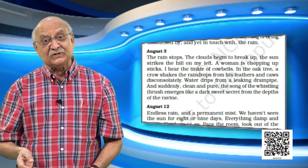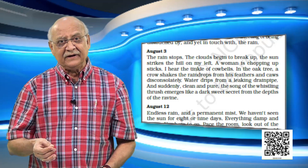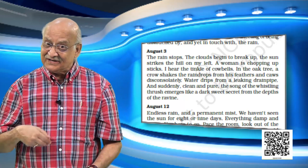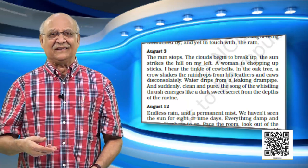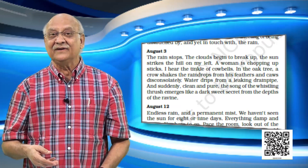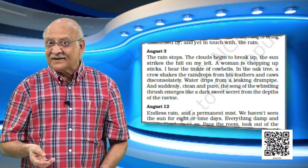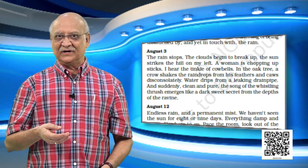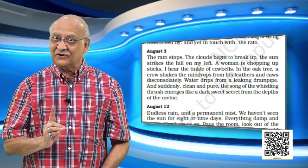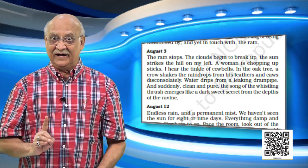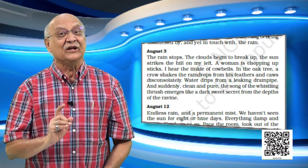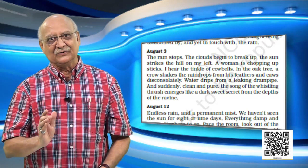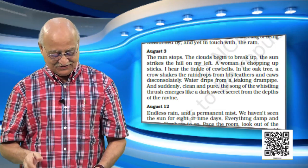He also says there is water dripping down from the drainage — all the collected water is now coming down the drain. And all of a sudden, on the 3rd of August, Ruskin Bond hears birds singing — a thrush sings. So how many noises did you hear? You heard the woman chopping, the cow bells, the raindrops, the crow shaking, the drainage water, and the thrush singing. First you saw the flowers, then you saw the reptiles and the leopard, then you heard all the birds and now all the noises.